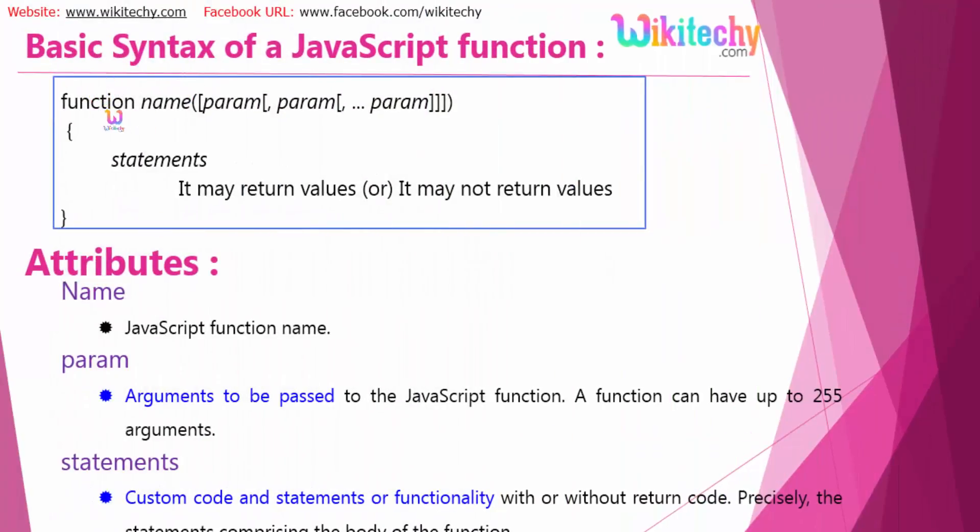Here is the syntax of a function. You have the function keyword, the name of the function, and the parameters. It can have zero to any number of parameters. Here is the statement, which may or may not return any values. You can see the name, the parameters, and the statement.